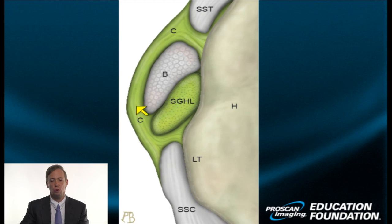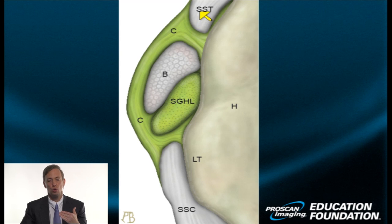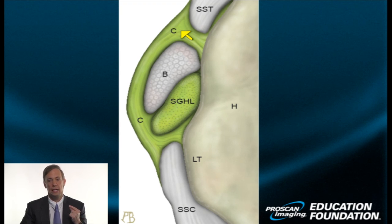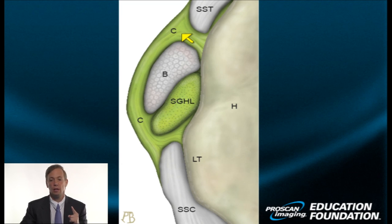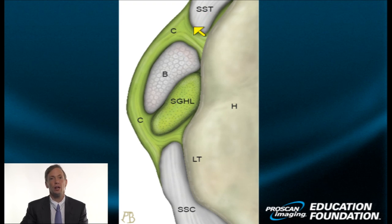The take-home message is that the coracohumeral ligament — a broad fibroelastic membrane — sends fibers along the most anteroinferior surface of the supraspinatus tendon, and these two blend together. So the coracohumeral ligament, shown in green, is part of the rotator cuff complex. It's not uncommon for tears to begin right here and then proceed either superiorly into the supraspinatus or inferiorly into other structures.